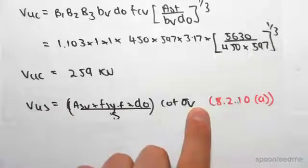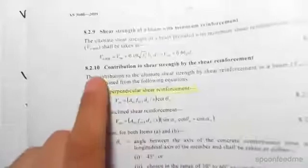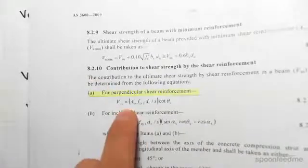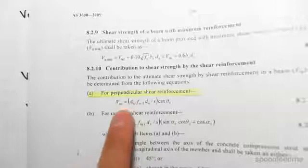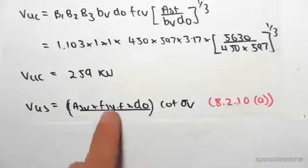This is given in clause 8.2.10a. We have a formula for the shear reinforcement. This is for perpendicular, we're not doing incline. So the formula is there. I've just rewritten it nice and big over here.